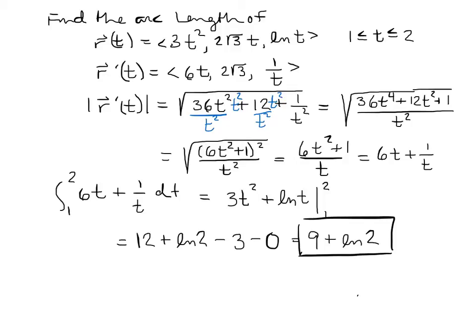So if a particle traveled along this curve starting at time t = 1 and ending at t = 2, it would have traveled a total arc length of 9 + ln 2 units.